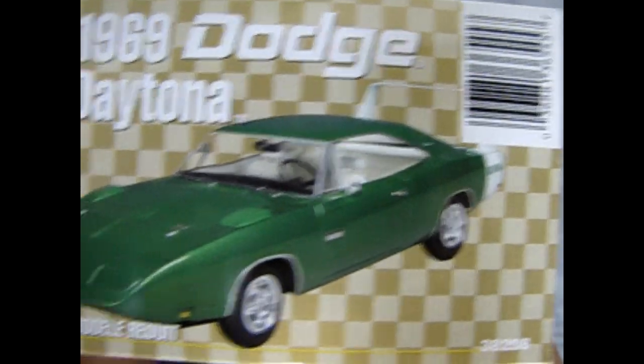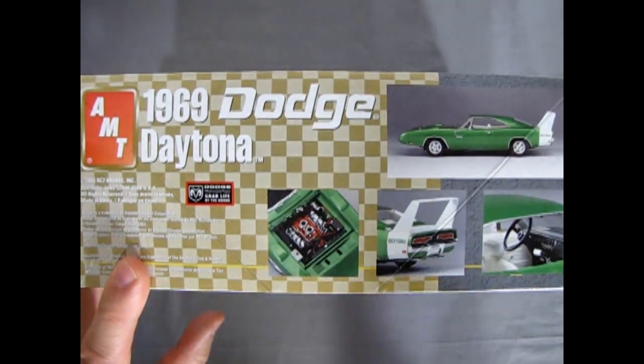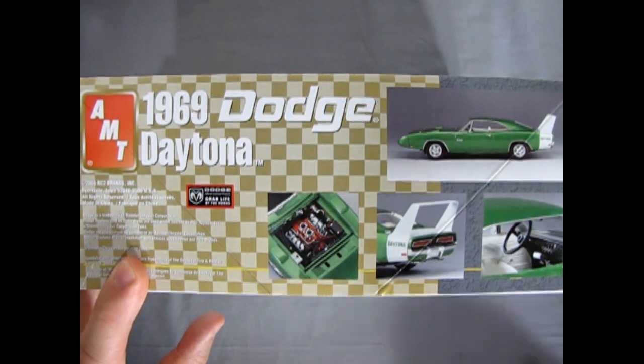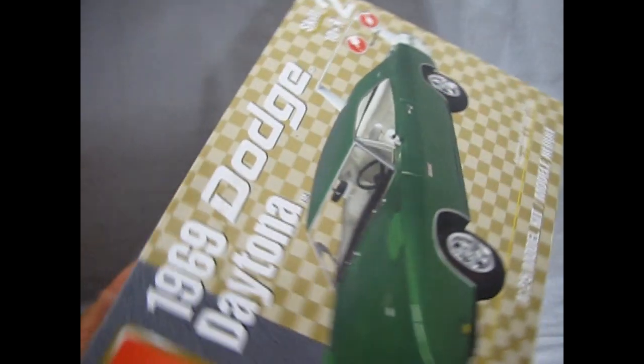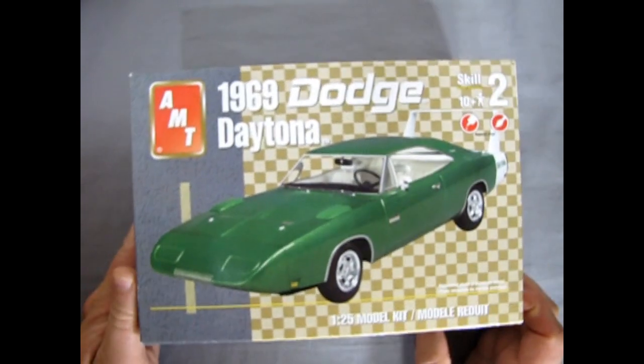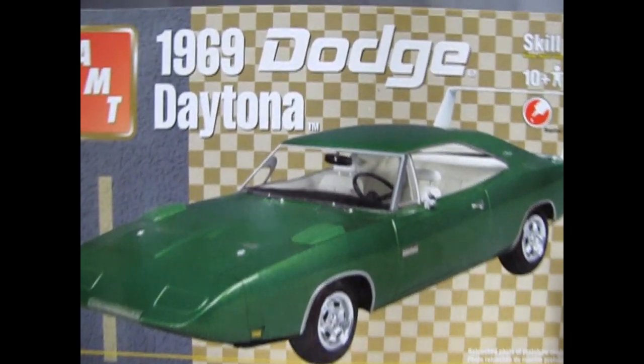This side of the box here of course shows our car with a barcode, and then this side again is the same as the other. Licensed by Dodge. This kit came out in 2004 by RC2 and I just happened to be lucky enough to get one for our review today.